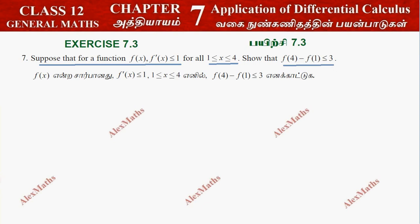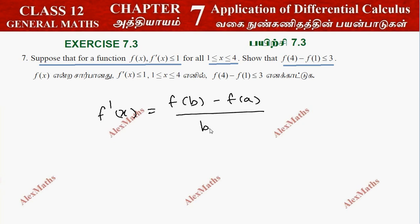So if we look at the Mean Value Theorem, f dash of x equals f of b minus f of a, whole divided by b minus a.